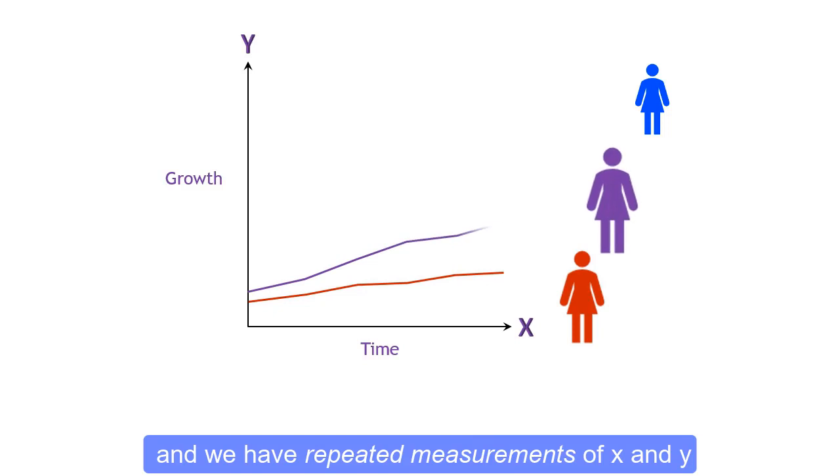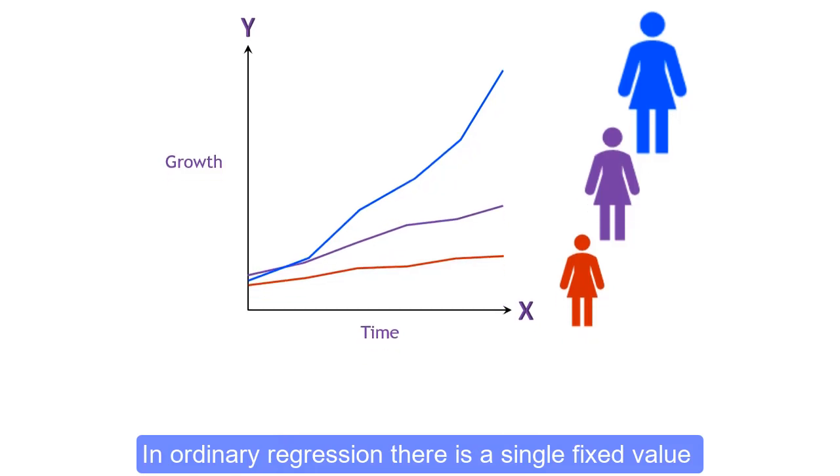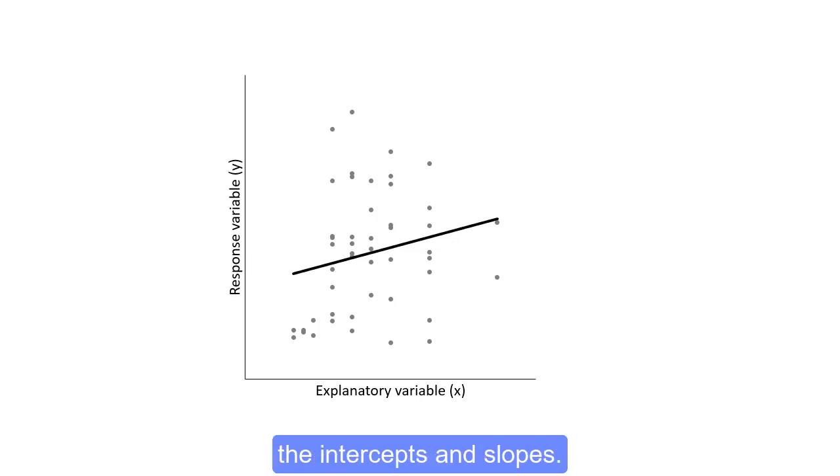We have repeated measurements of x and y on individual subjects. In ordinary regression, there is a single fixed value for each parameter, for example, the intercepts and slopes.